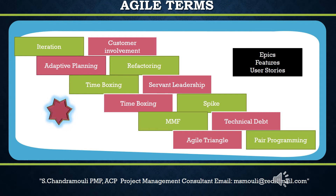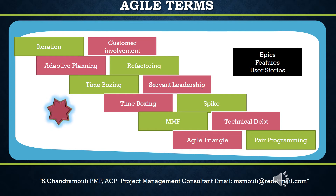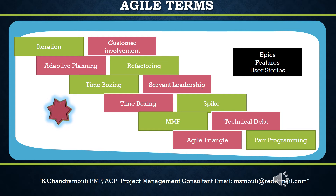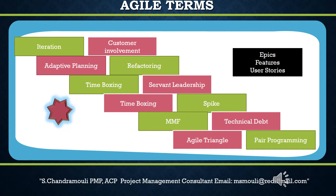Seventh, refactoring: restructuring the code without changing the functionality is called refactoring. It helps to strengthen the code further, enabling the addition of more functionalities, and helps to simplify the code. In agile projects, the same piece of code is refactored multiple times to enable future requirements to be fitted in.